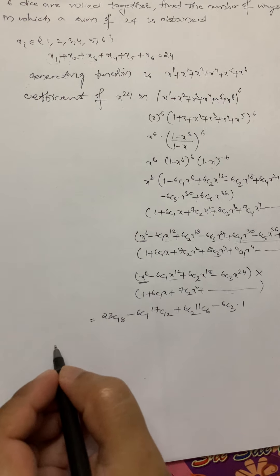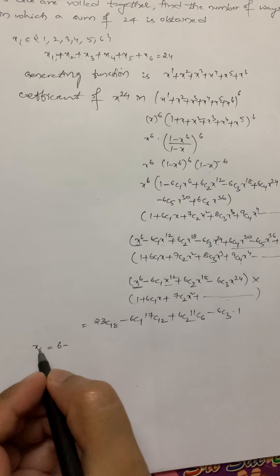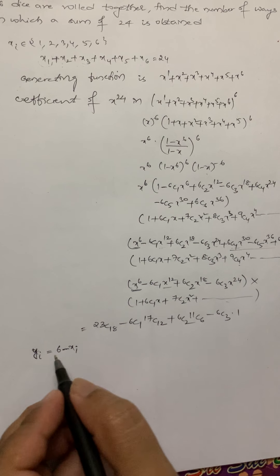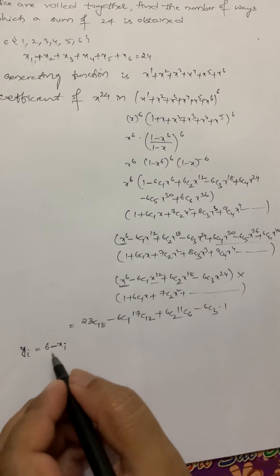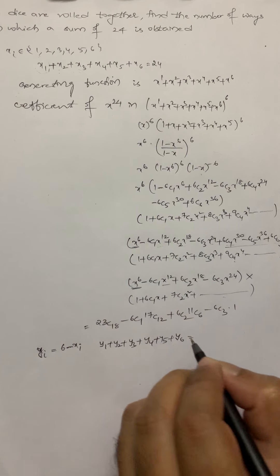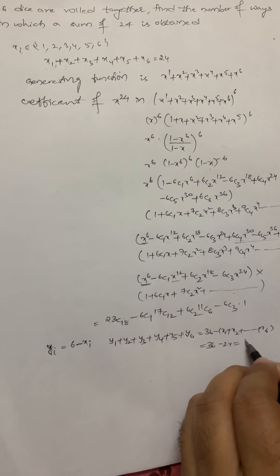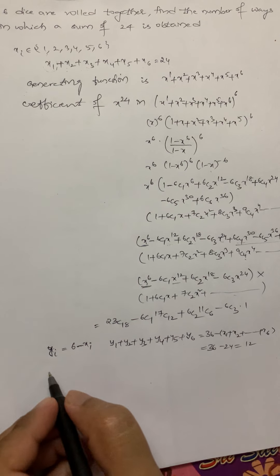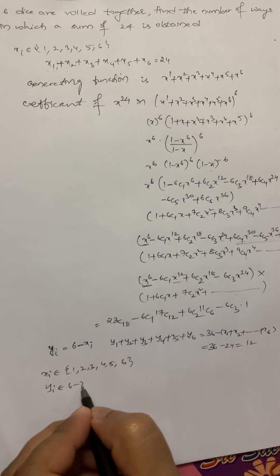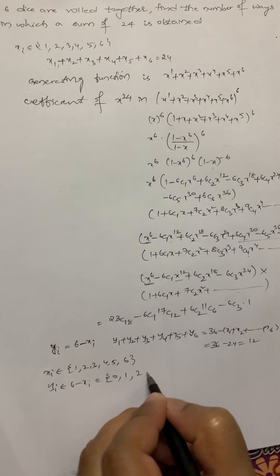We substitute yi = 6 − xi. So y1 = 6 − x1, y2 = 6 − x2, and so on. Then y1 + y2 + y3 + y4 + y5 + y6 = 36 − (x1 + x2 + … + x6) = 36 − 24 = 12. Since xi belongs to {1, 2, 3, 4, 5, 6}, yi = 6 − xi belongs to {0, 1, 2, 3, 4, 5}.